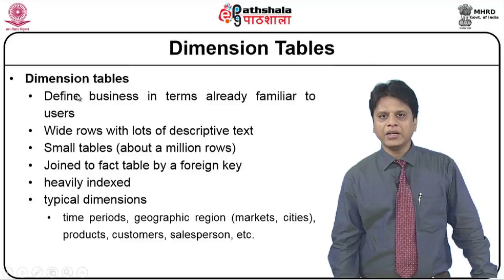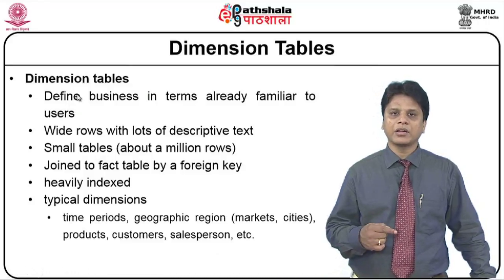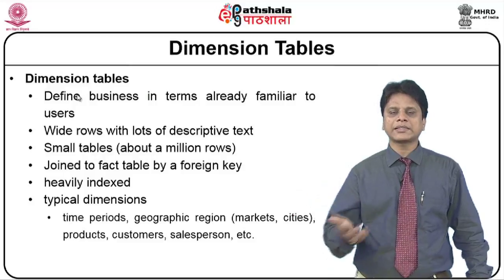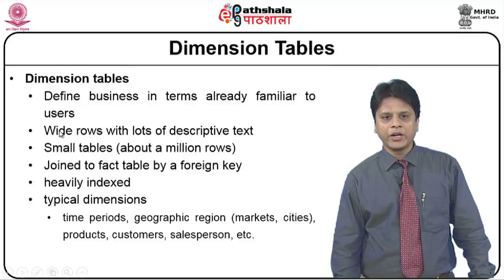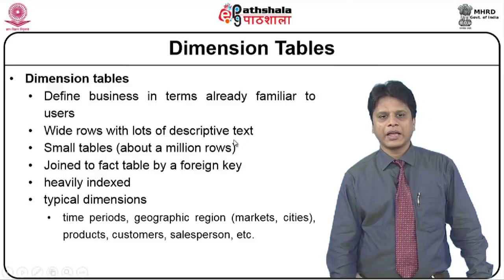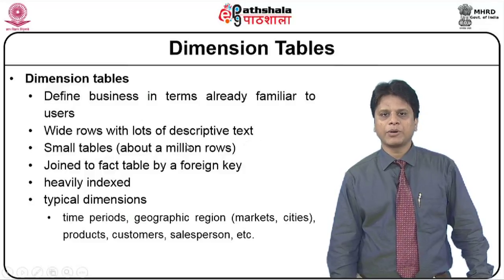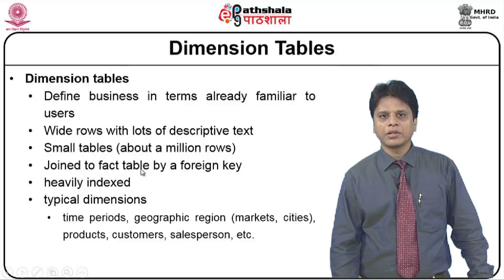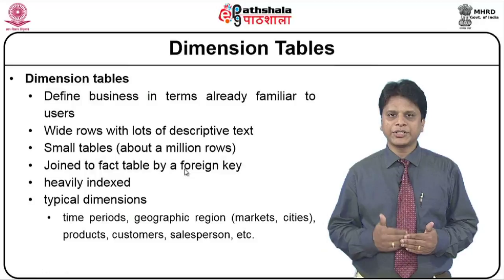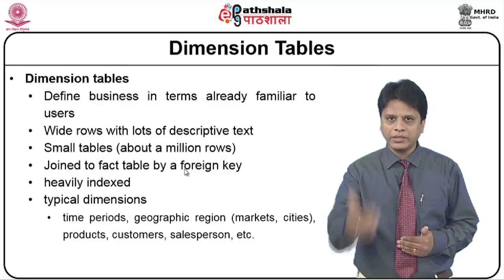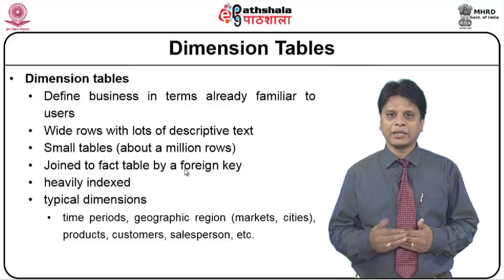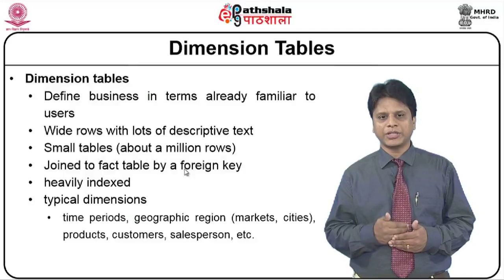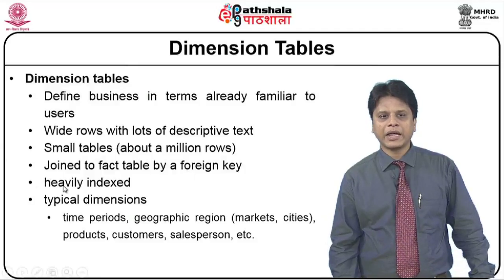Dimension tables define business in terms already familiar to the users. These will accommodate wide rows with a lot of descriptive text. Dimension tables are small tables — about a million rows, maximum about 10 lakh rows — joined to the fact table by a foreign key. After constructing dimension tables, we go for an advanced table called a fact table which accommodates all the dimensionality values. The fact table will have the primary keys of the dimension tables only. These dimension tables are heavily indexed. Typical dimension tables are like time period, geographical region, different products, customers, sales person, etc.